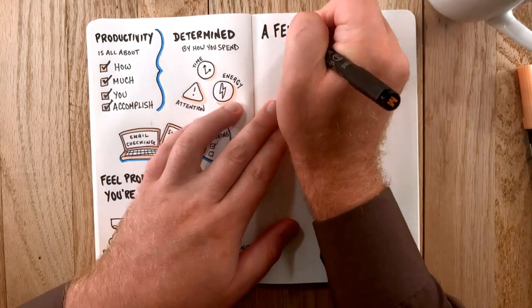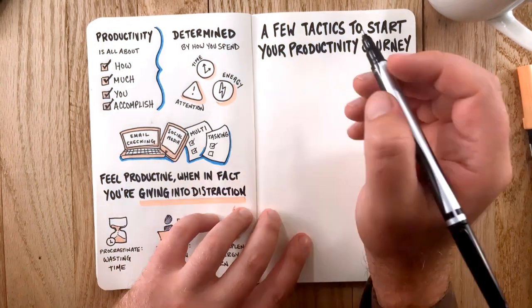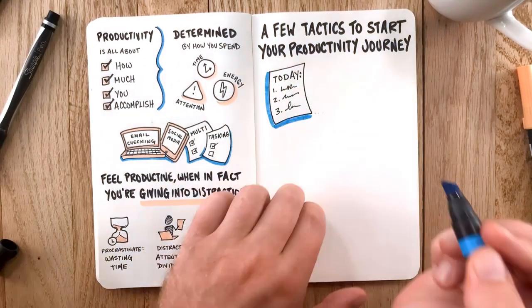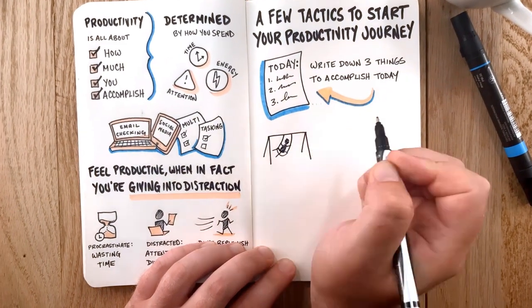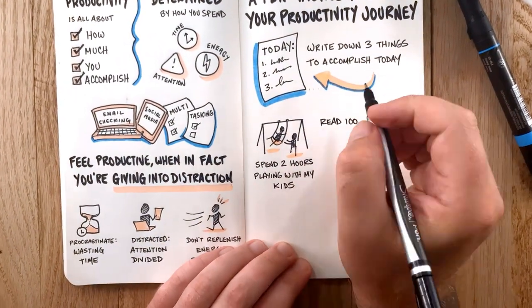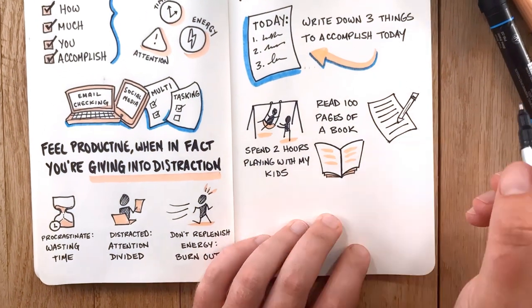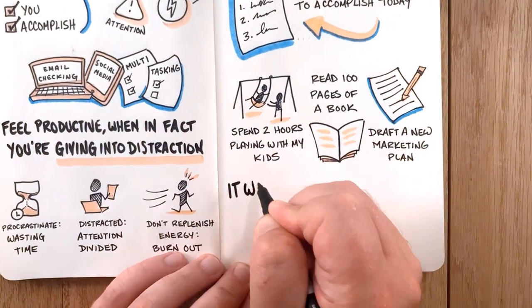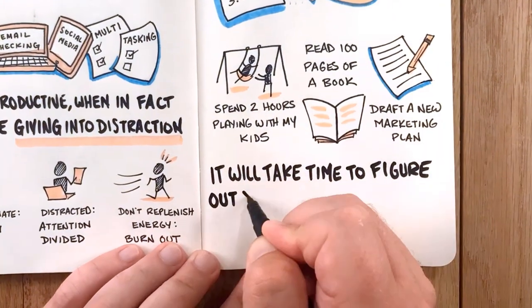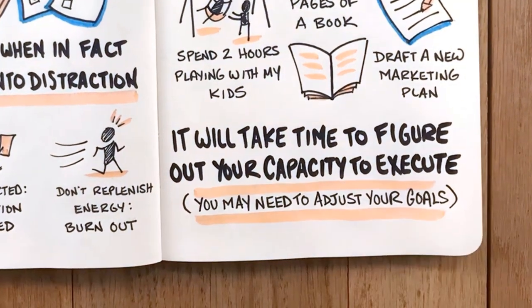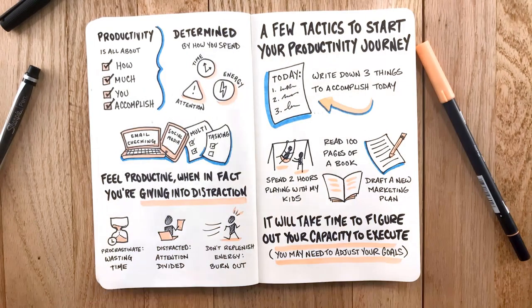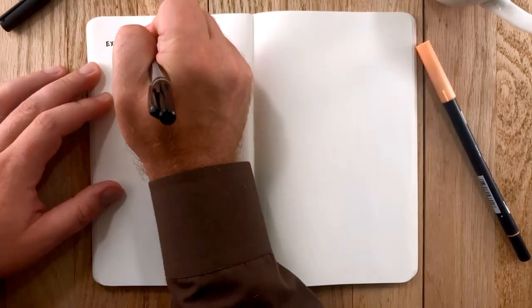A few tactics that work well and can get you started on your productivity journey are: start your day by writing down three things to accomplish today, like spend two hours playing with my friends, read a hundred pages of a book, and draft a new marketing plan. It will take time to figure out your capacity to execute, so you may need to adjust the types of goals you set for yourself.